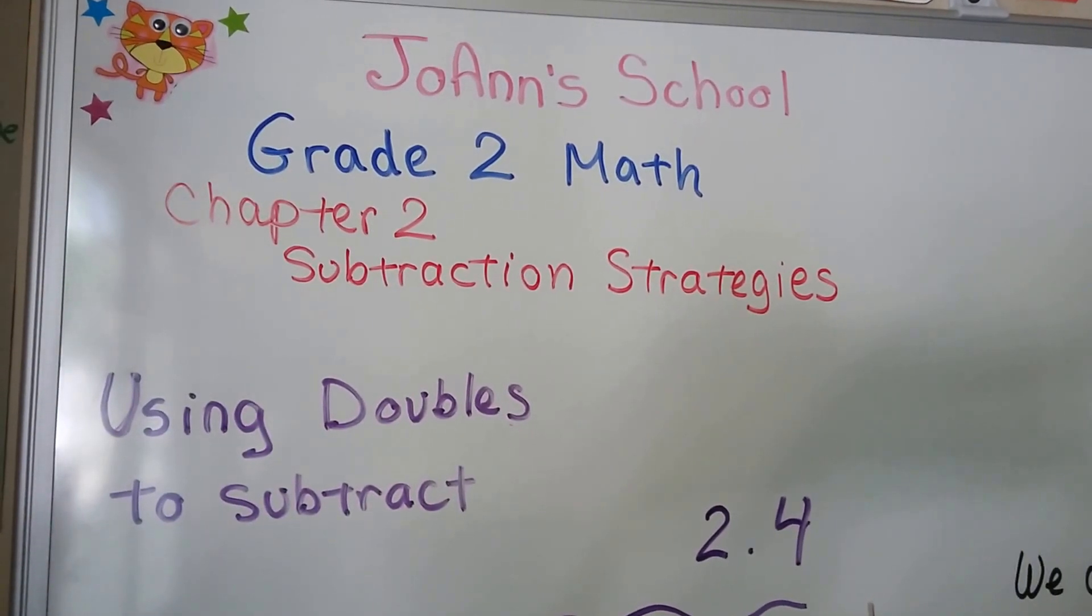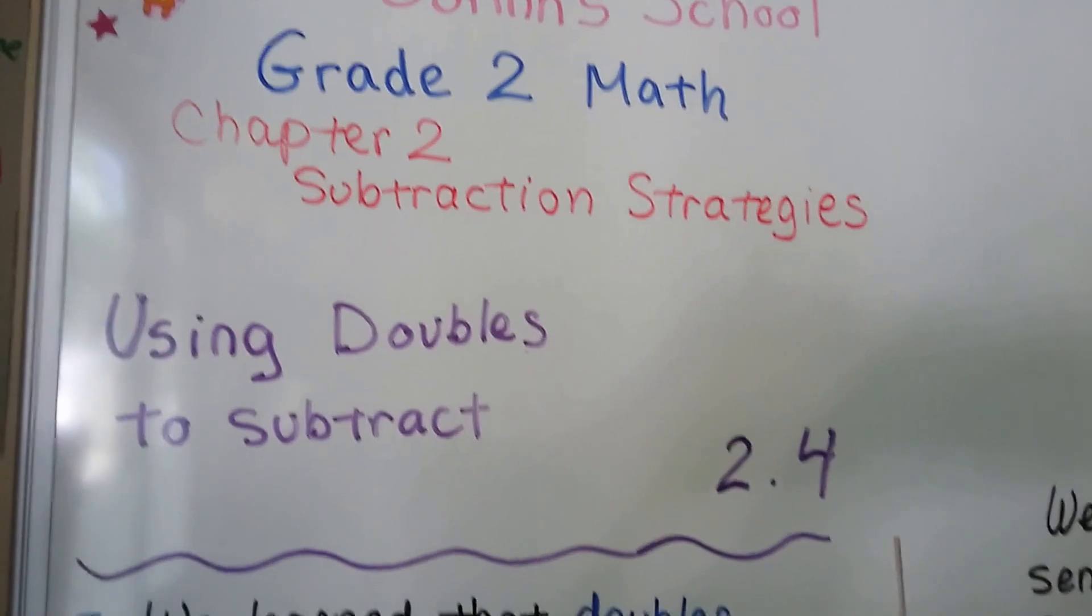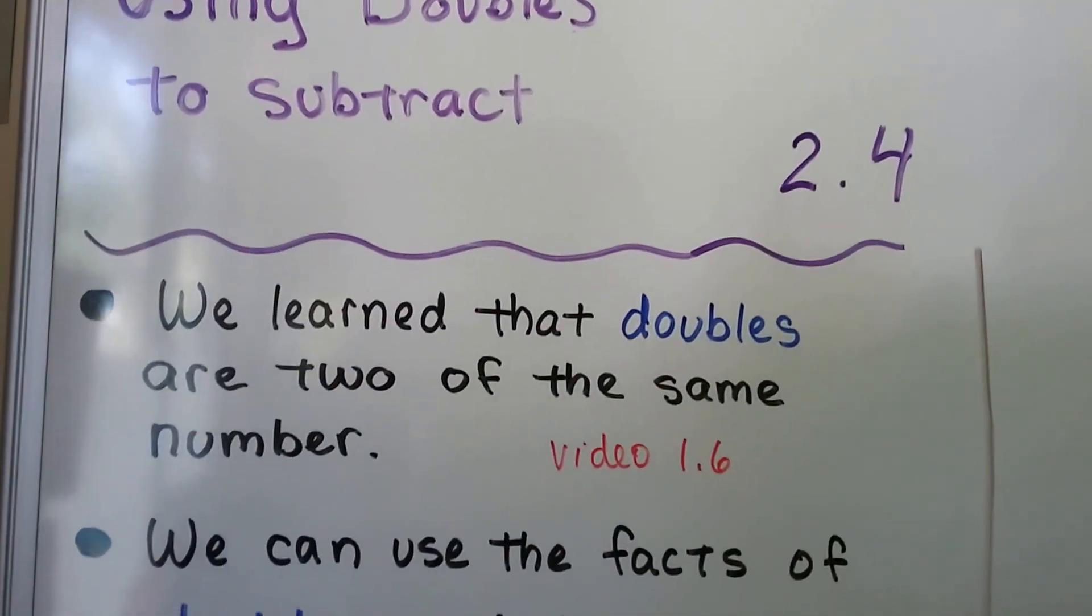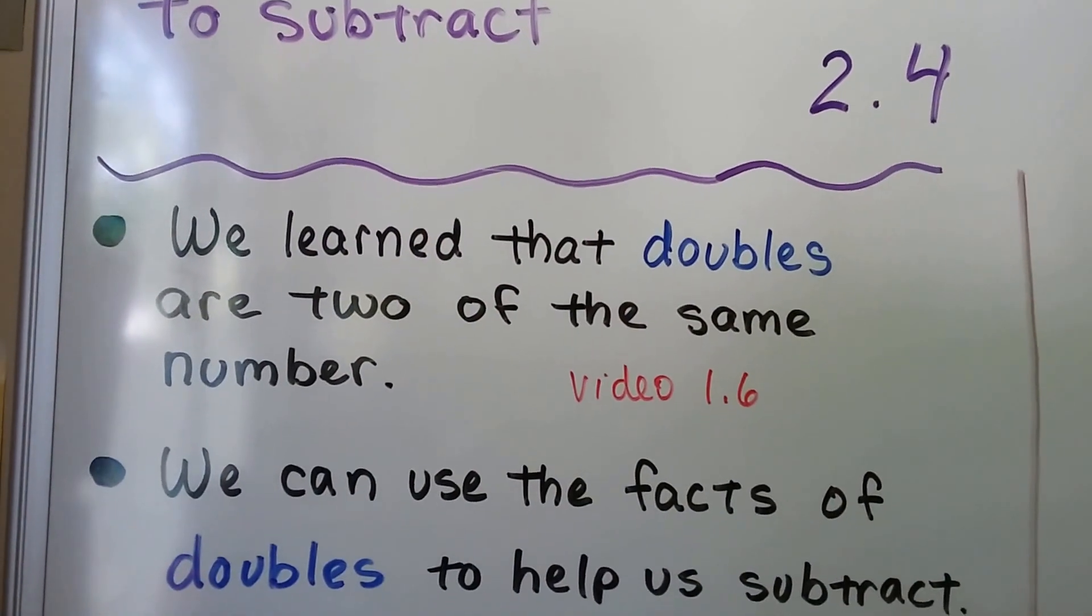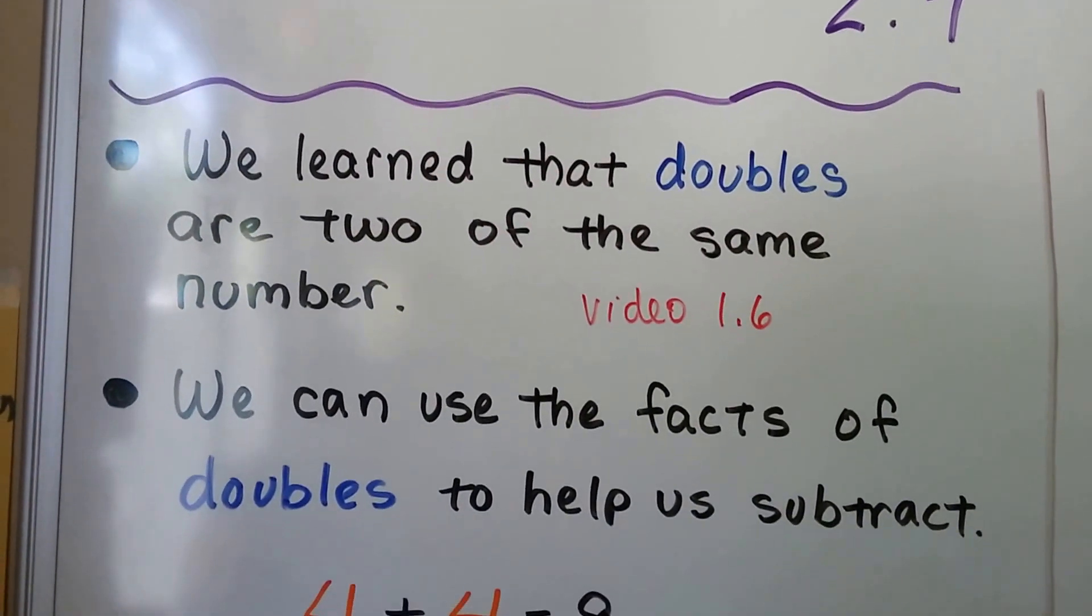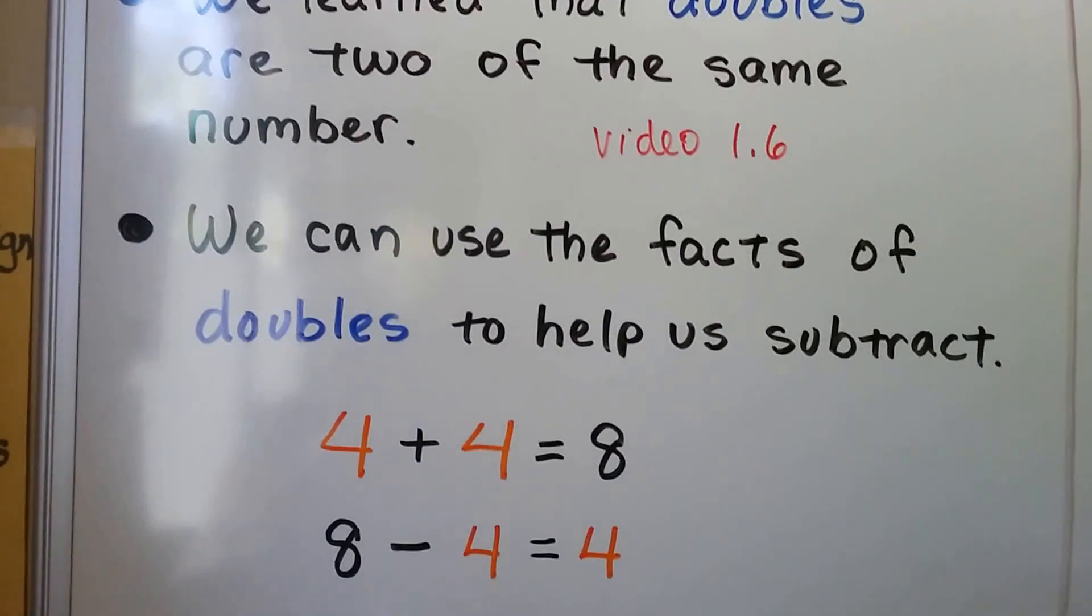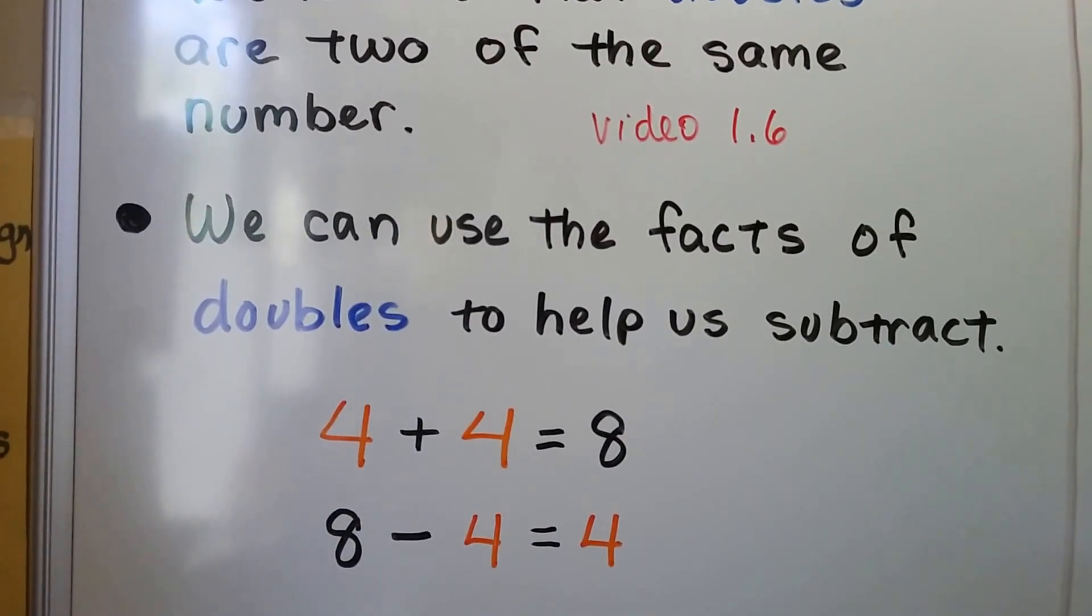Using doubles to subtract, lesson 2.4. We learned that doubles are two of the same number. We did that in video 1.6, the first chapter. We can use the facts of doubles to help us subtract. 4 plus 4, those are doubles, and 4 plus 4 equals 8.